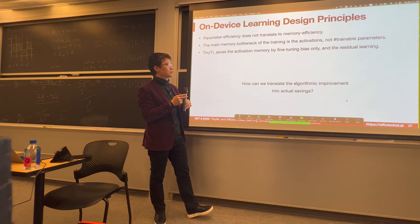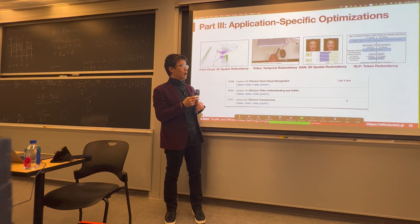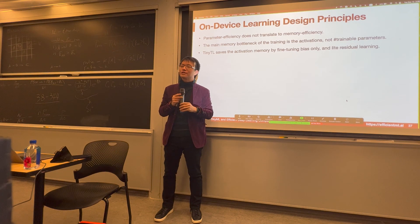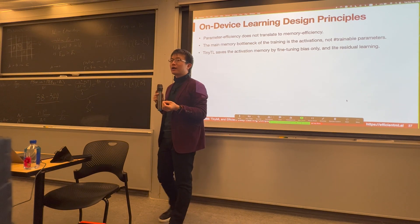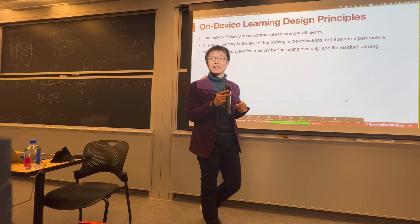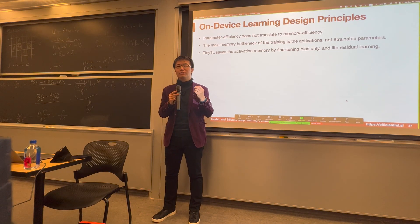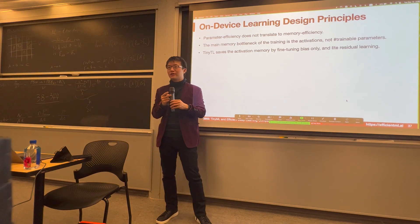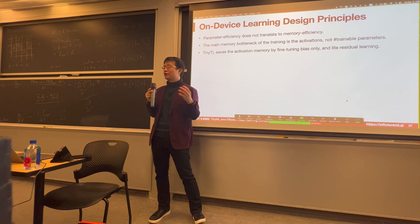We also learned techniques to translate algorithm improvements into actual savings through algorithm and system co-design. For example, using the tiny training engine — recently open-sourced on GitHub — we use quantization-aware scaling and sparse layer/sparse tensor updates to only update a subset of the model's parameters. We cannot directly scale a model designed for mobile inference to mobile training, since they are fundamentally different. Therefore, we need new techniques such as quantization-aware scaling and sparse tensor update. Our experiments showed that a small dense model is less effective than a large sparse model.